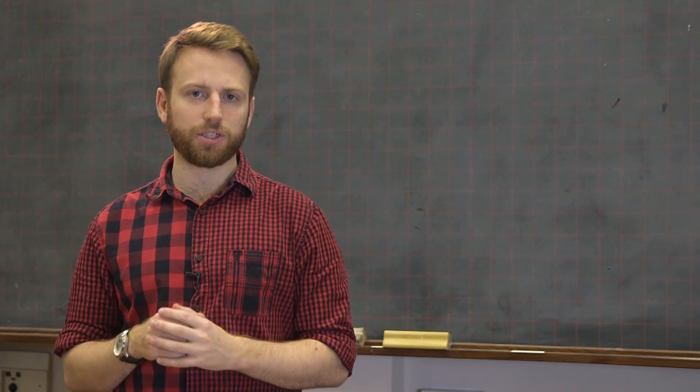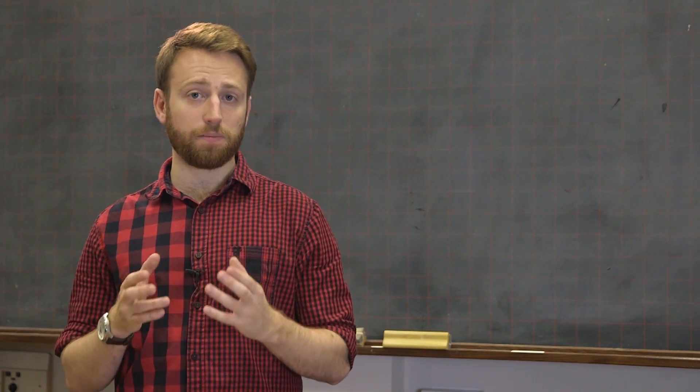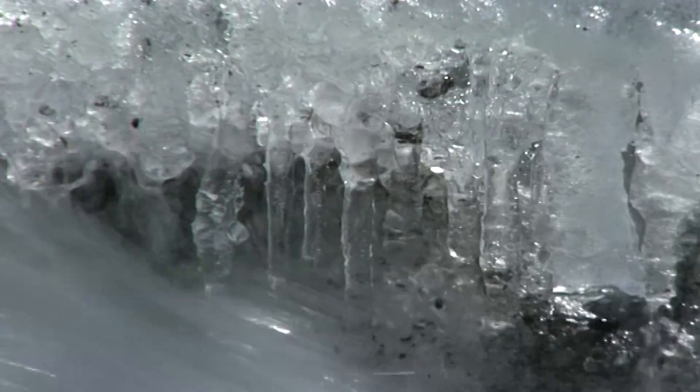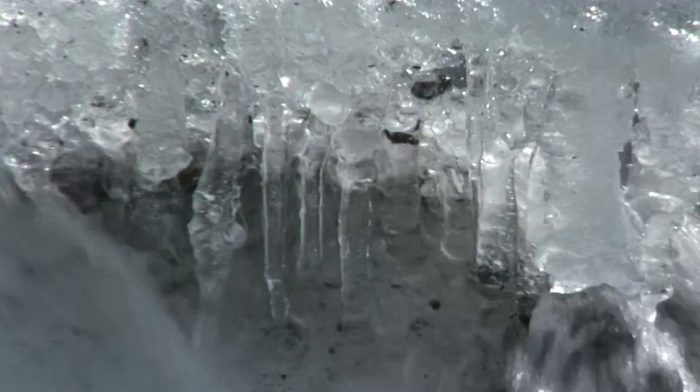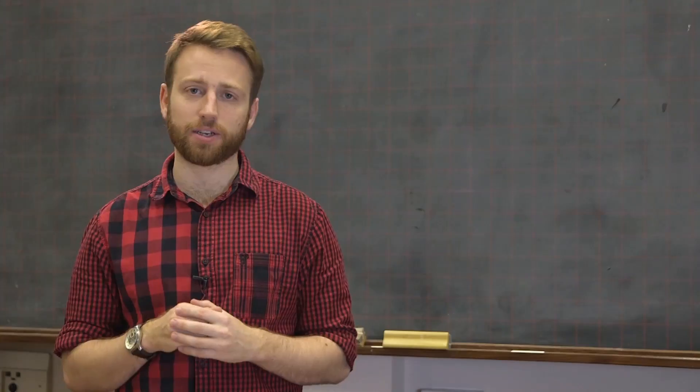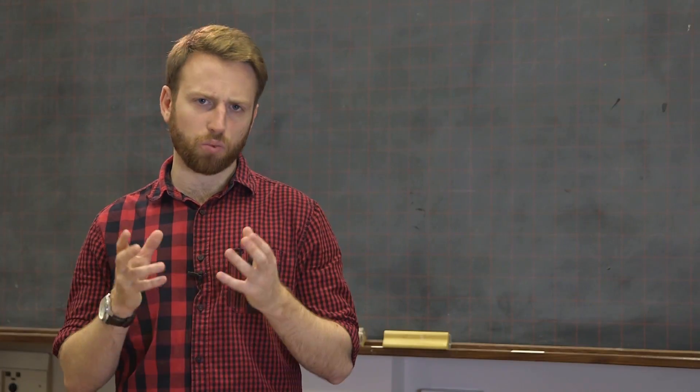The majority of water in a glacial system is actually delivered by surface melt and rain. This both delivers water and energy to the base of the glacier as the water freezes back on. Energy can also be absorbed at the base of the glacier via geothermal heating or frictional heating.